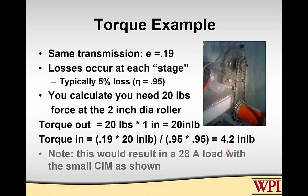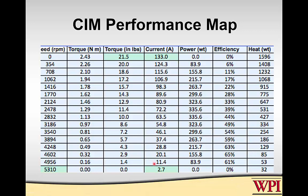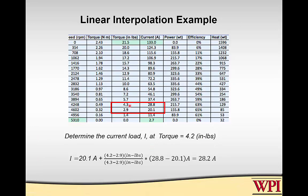Now if we want to figure out what load this places on the motor, we can look at a motor curve diagram showing torque in inch-pounds versus current. We do a linear interpolation. At 4.2 inch-pounds, which is between 2.9 and 4.3 on the table, we calculate: current equals 20.1 plus the fraction (4.2 minus 2.9) over (4.3 minus 2.9), multiplied by the difference (28.8 minus 20.1), added to 20.1 — giving us 28.2 amps.